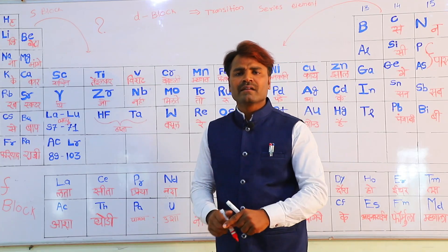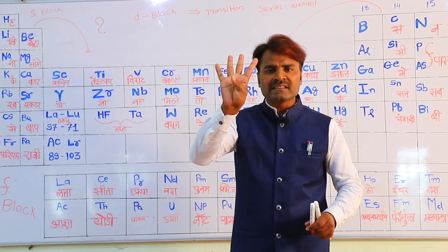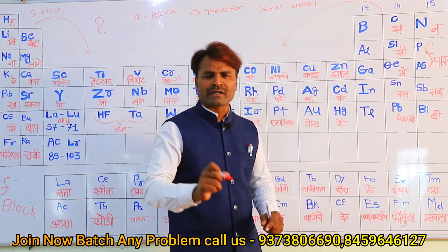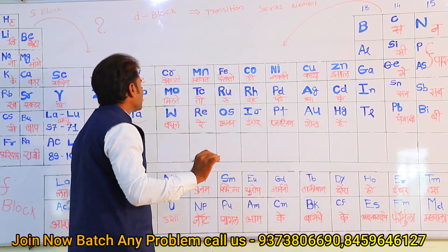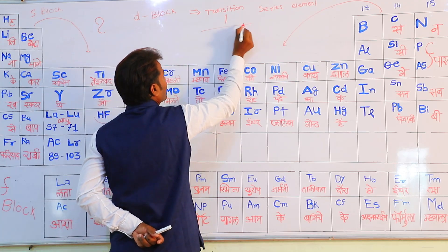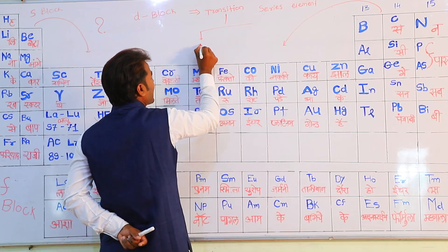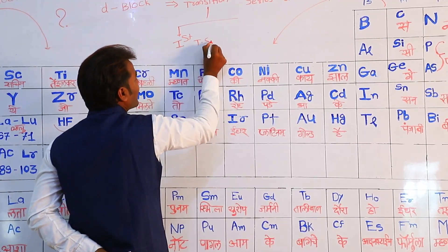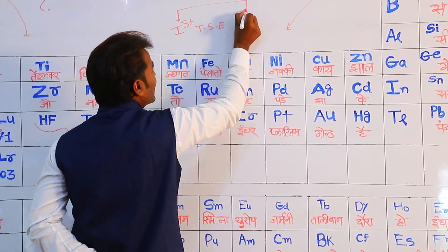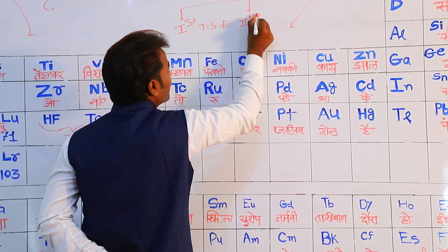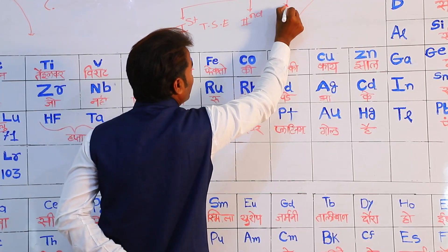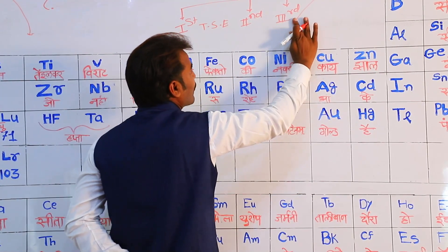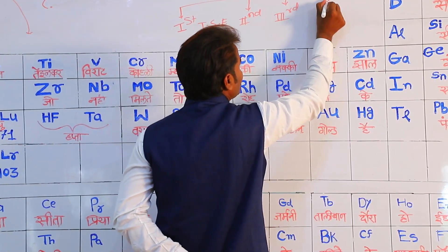Transition series elements — how many types are there? There are four types. The types are simple: First transition series element, Second transition series element, Third transition series element, and Fourth transition series element.